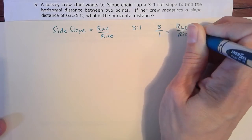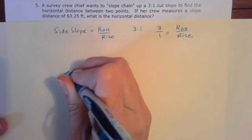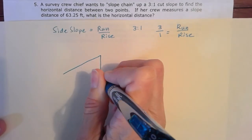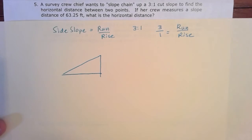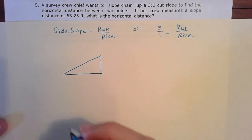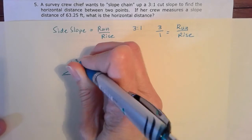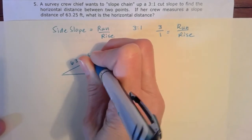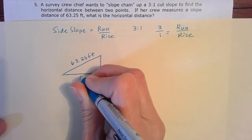So we've got that base equation to start with. Now, in this case, we're given the slope distance. So we're actually given the distance along the angle. So that's what that means to kind of slope chain up that angle. And so we have the slope distance of 63.25 feet. So we're not being told an X, a run, or a rise in this case.